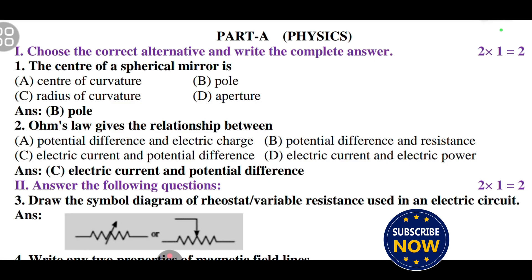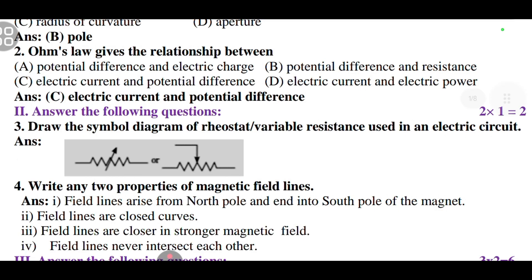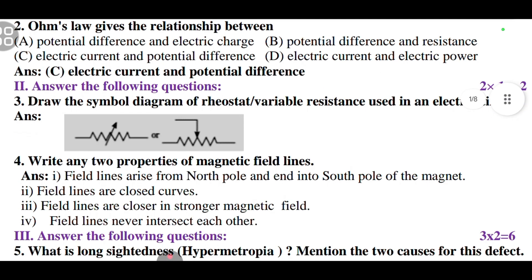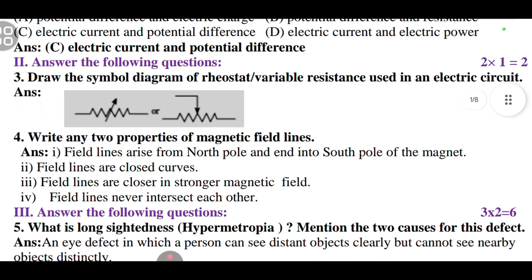The first question is: the center of the spherical mirror is? The answer is B, pole. Second question: Ohm's law shows the relationship between? The answer C is correct: electric current and potential difference.